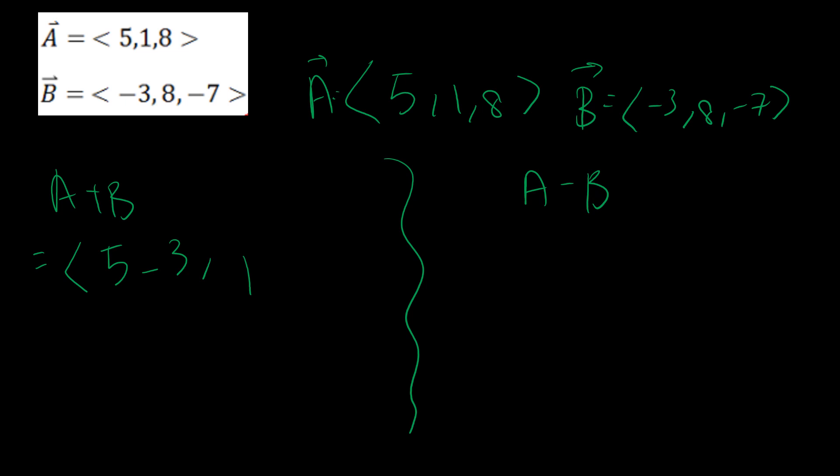For practice, let's do an example. We're given two vectors: a = (5, 1, 8) and b = (-3, 8, -7). We're finding a plus b and a minus b. So a plus b: 5 plus negative 3, 1 plus 8, 8 plus negative 7, which gives (2, 9, 1).